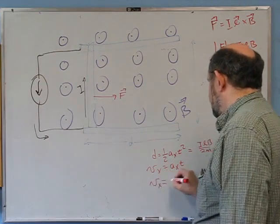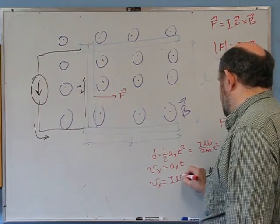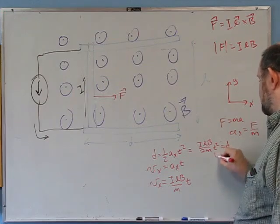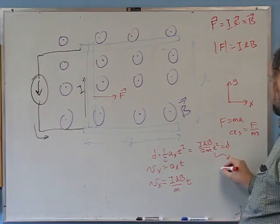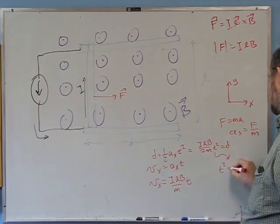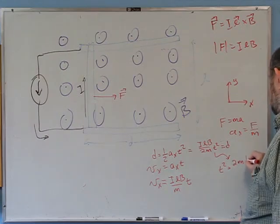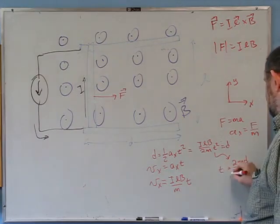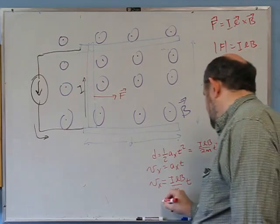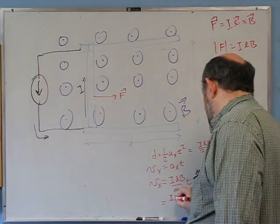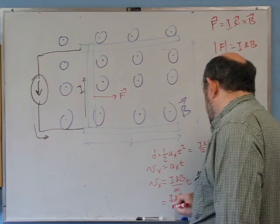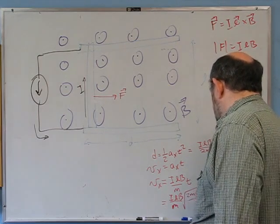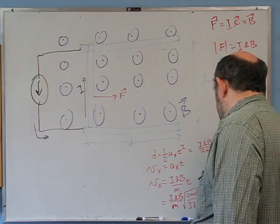Since Vx = (ILB/m)·t, I need to eliminate t. From the distance equation, t² = 2md/(ILB), so t = √(2md/(ILB)). Substituting, Vx = (ILB/m)·√(2md/(ILB)).